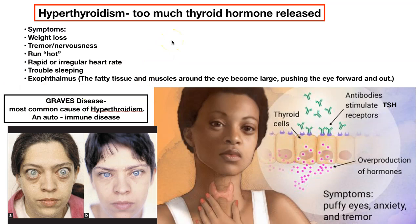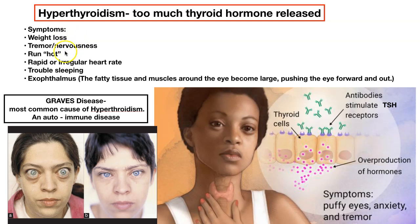If things go wrong — and the thyroid is one of those glands you're going to see go wrong a lot in medicine — if you have hyperthyroidism, that means too much thyroid hormone is released. The symptoms are related to its function. It is stimulating metabolism, so if your metabolism is way too high, you're going to experience weight loss, feel nervous and anxious, have a tremor, always feel hot, have a fast and possibly irregular heart rate, and have problems sleeping.